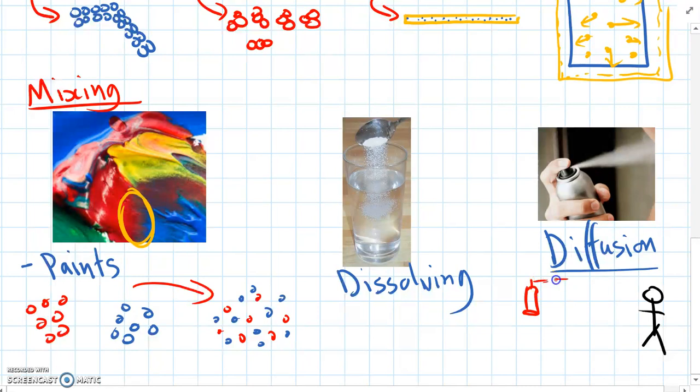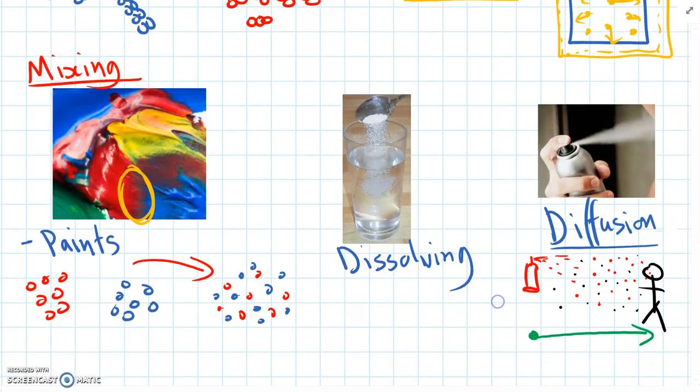...then the particles of that aerosol can will randomly mix slowly through the air until they reach our nose. So they'll start at the can and then over time they'll randomly mix together with the air particles that were already there. So diffusion is like the spreading of particles.